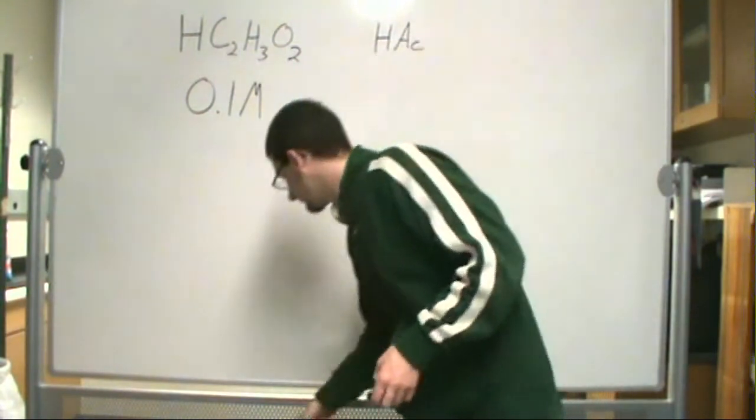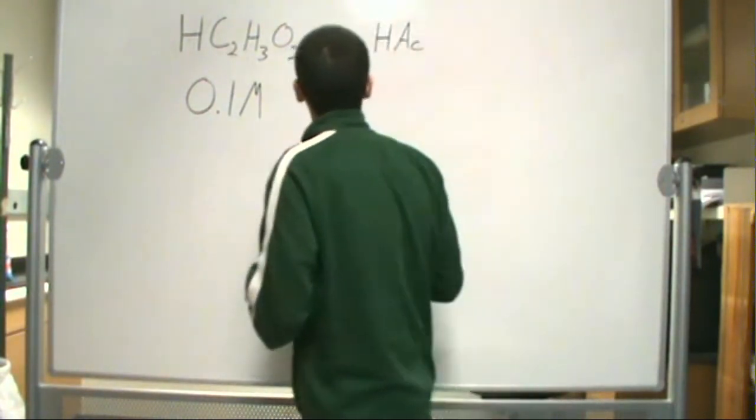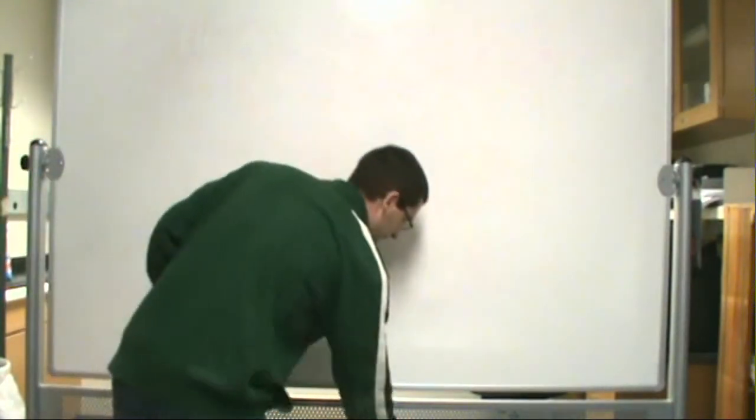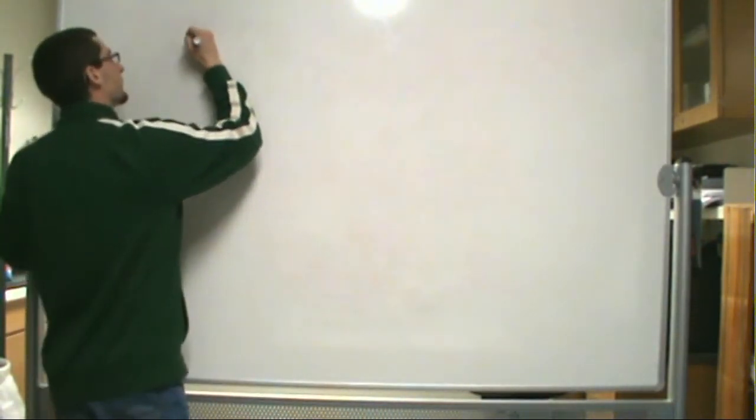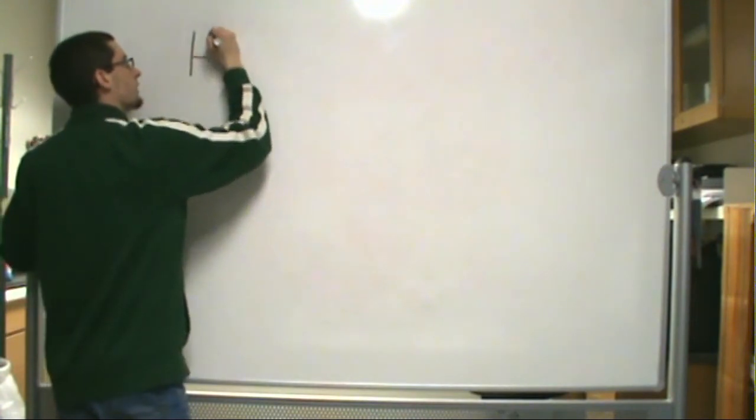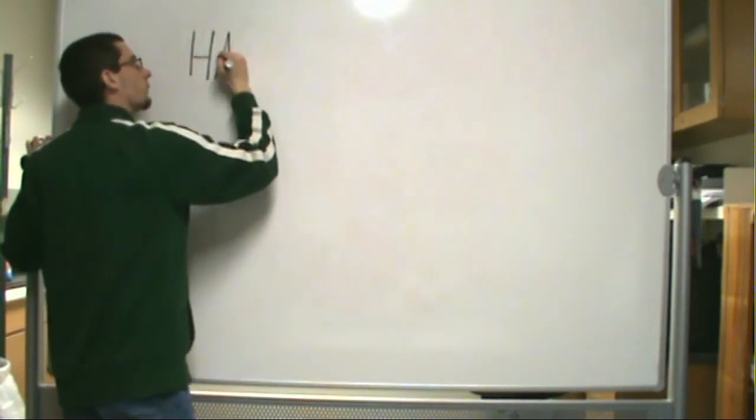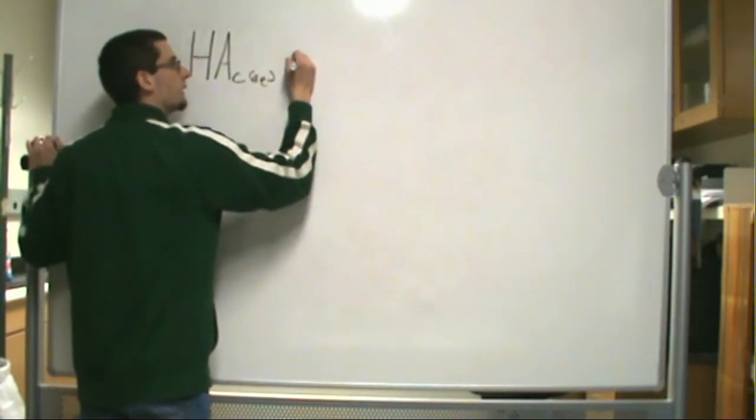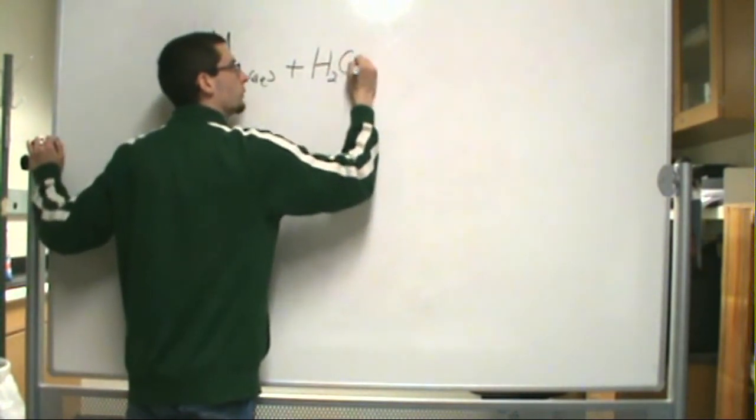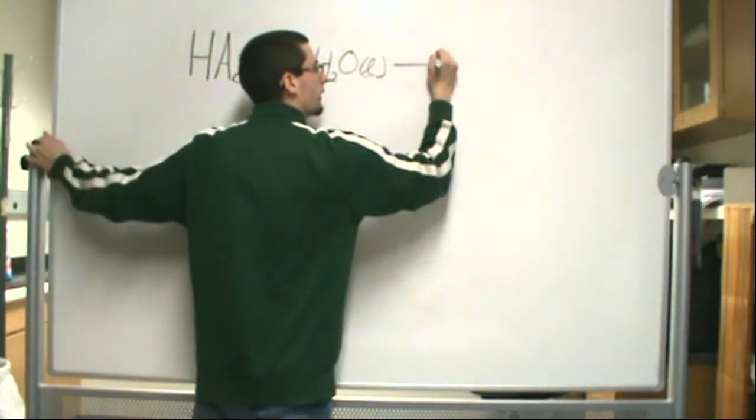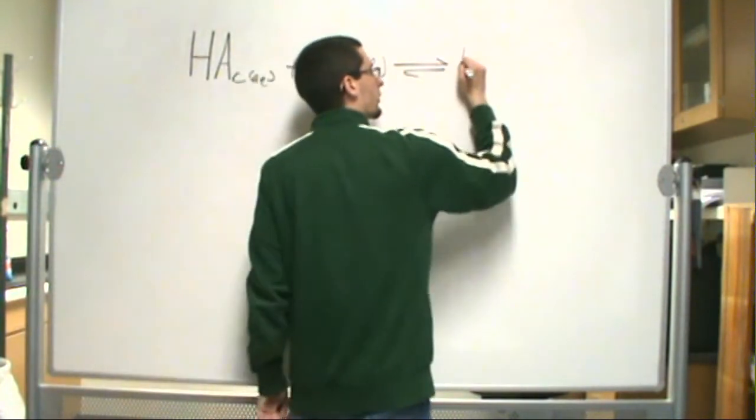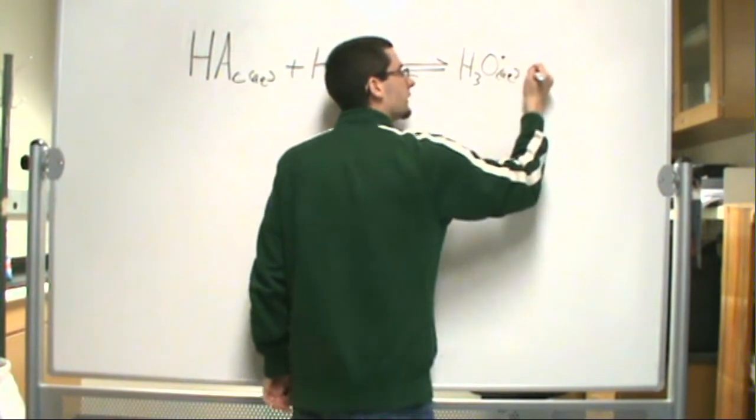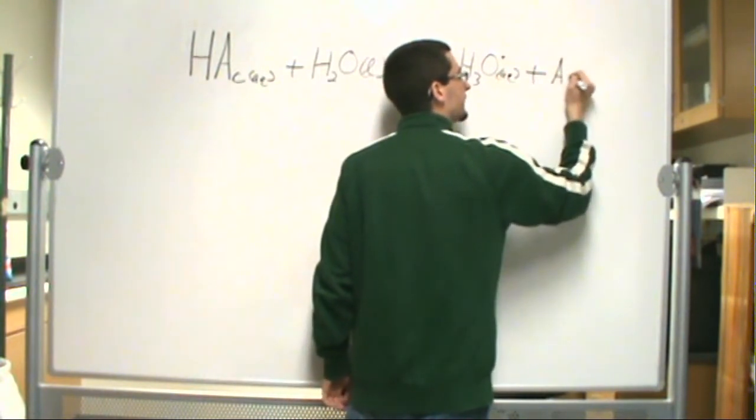Well, first thing is first, we have to write a reaction for this. So just like our generic acid, we have something along the lines of our acetic acid in aqueous solution plus water, H2O, pure liquid, and it ends up going to our hydronium ion, H3O+, also aqueous, plus our acetate anion.